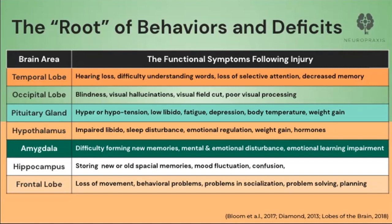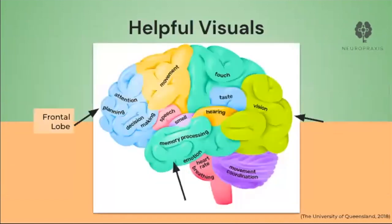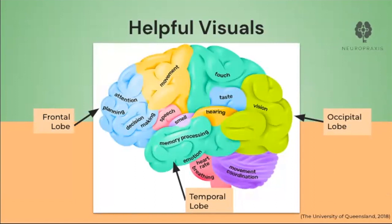The next few pages have helpful visuals of where these lobes are located and their functions. Here in blue you can see the frontal lobe, where higher-level cognitive functions occur. At the bottom of the image you can see the temporal lobe in mint green, which helps process auditory information from the environment and also aids in storing and recollecting memories. Here in the back portion of the image, you can see the occipital lobe in green, known for receiving information from the eyes and making sense of visual information.